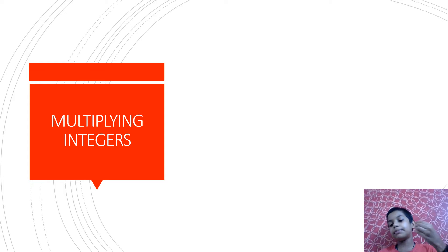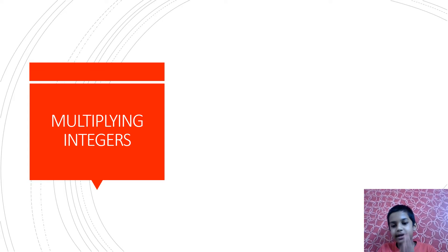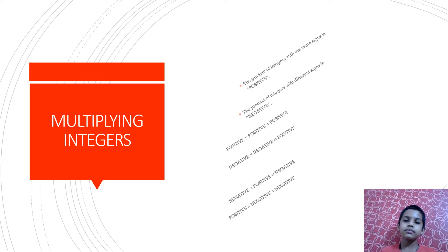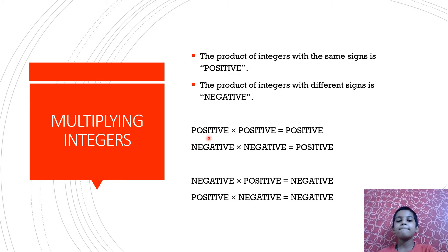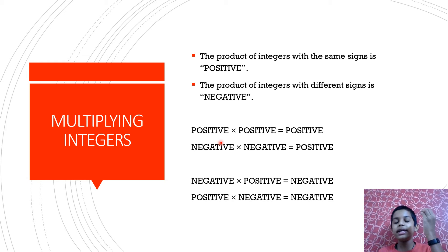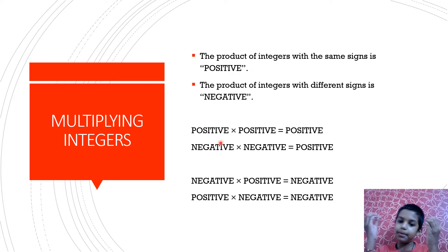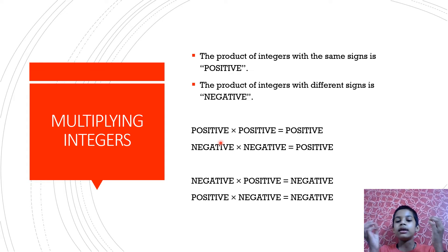Now let's move on to multiplying integers. The good news is that multiplying and dividing integers are not that tough as adding or subtracting. The rules are: the product of two integers with the same sign is positive, and the product of integers with different signs is negative. So positive times positive is always positive, negative times negative is always positive, and negative times positive is negative.